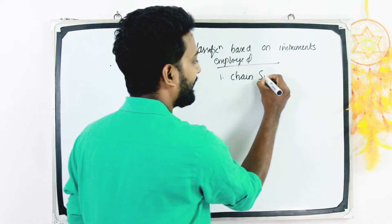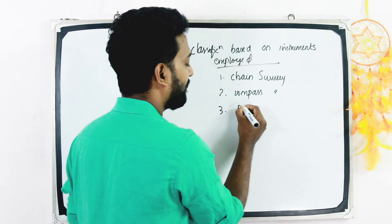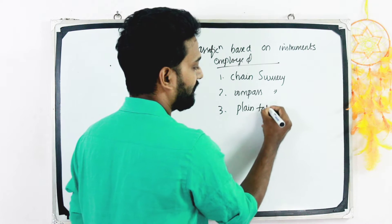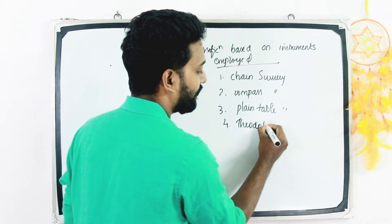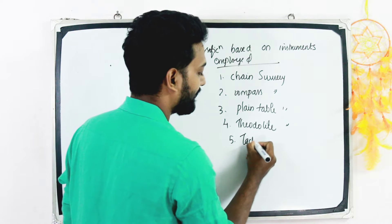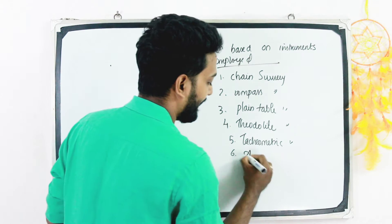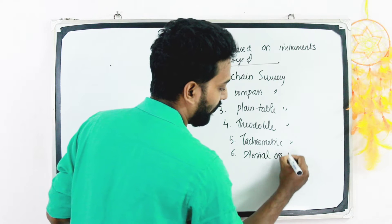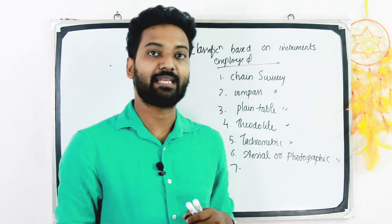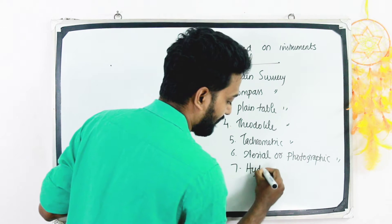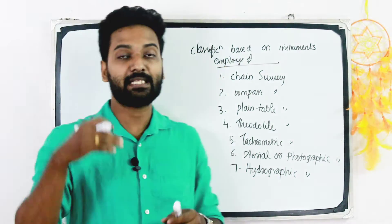Classifications Based on Instruments Employed include: first, chain survey; second, compass survey; third, plane table survey; fourth, theodolite survey; fifth, tachymetric survey; sixth, aerial or photographic survey; and the last one is hydrographic survey.